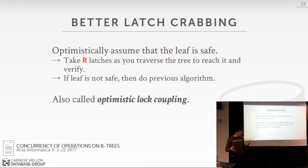An improvement from 1977, sometimes called optimistic lock coupling, optimistically assumes the path from root to leaf will be safe, so only read latches are taken going down. At the leaf, a write latch is acquired for the modification. If the traversal reveals the path is actually not safe, abort and redo it using write latches all the way down. A version of this basic idea appears in the ART index from HyPer, covered on Wednesday next week.